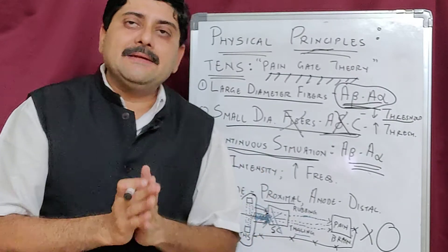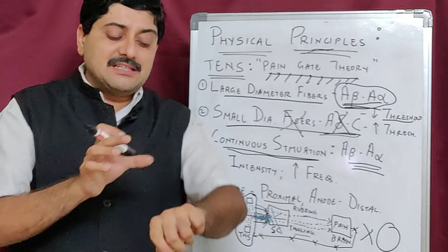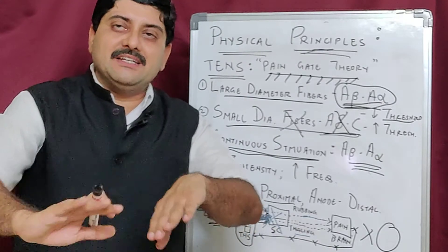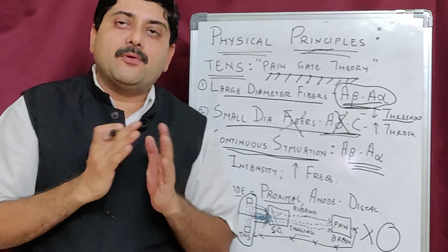Anytime you are giving TENS, remember cathode is placed proximally because you want to give a sensory stimulation and that will go for orthodromic conduction.